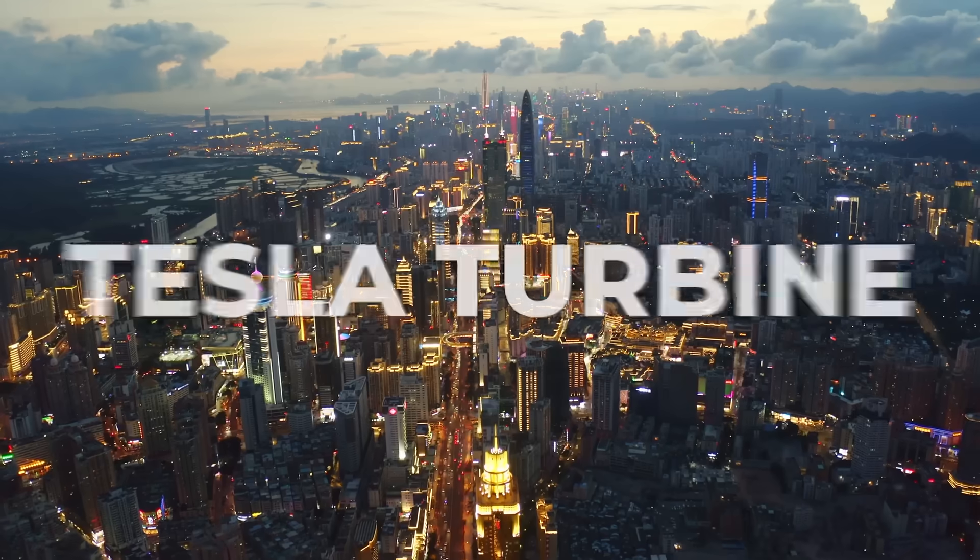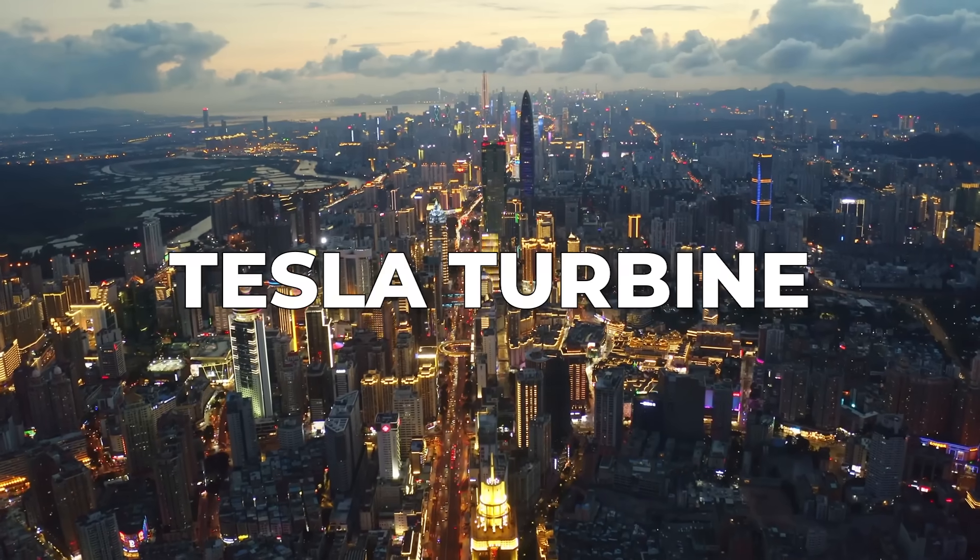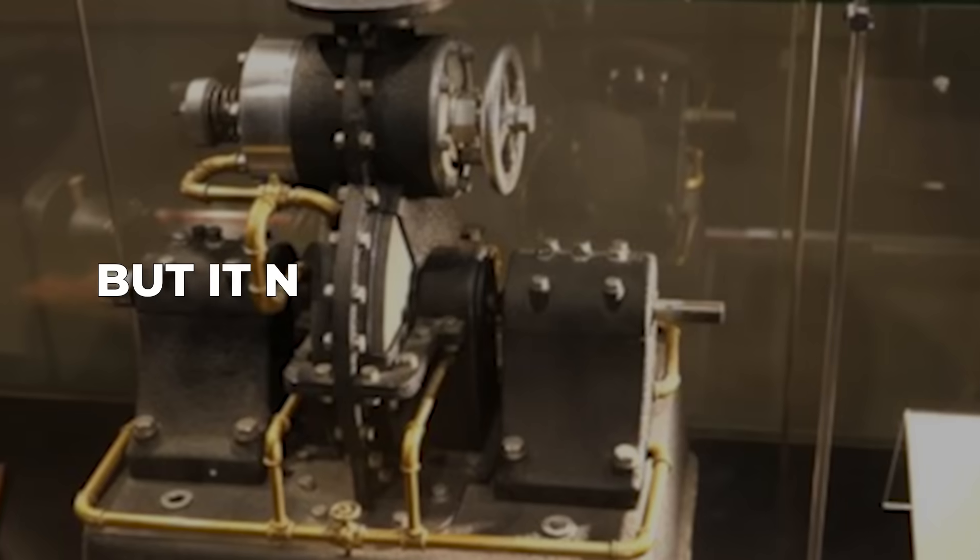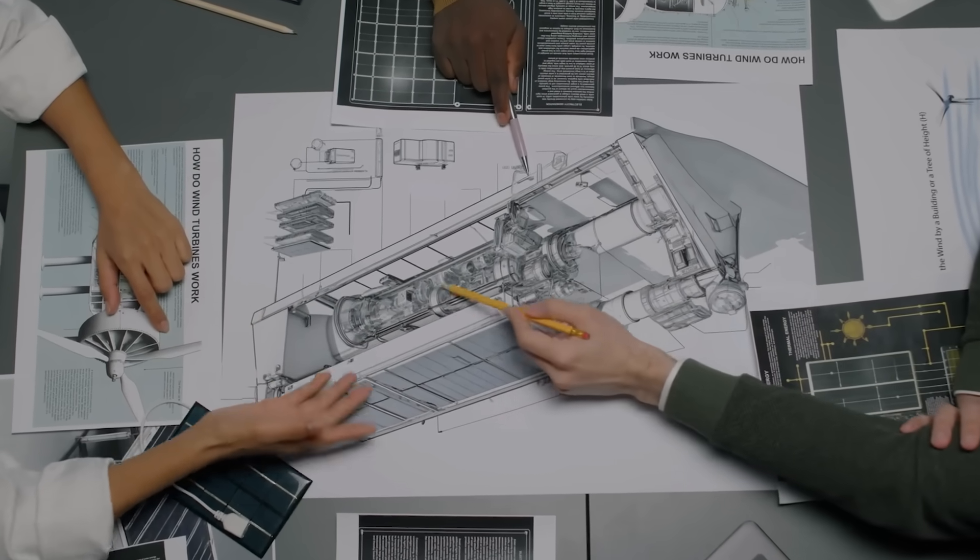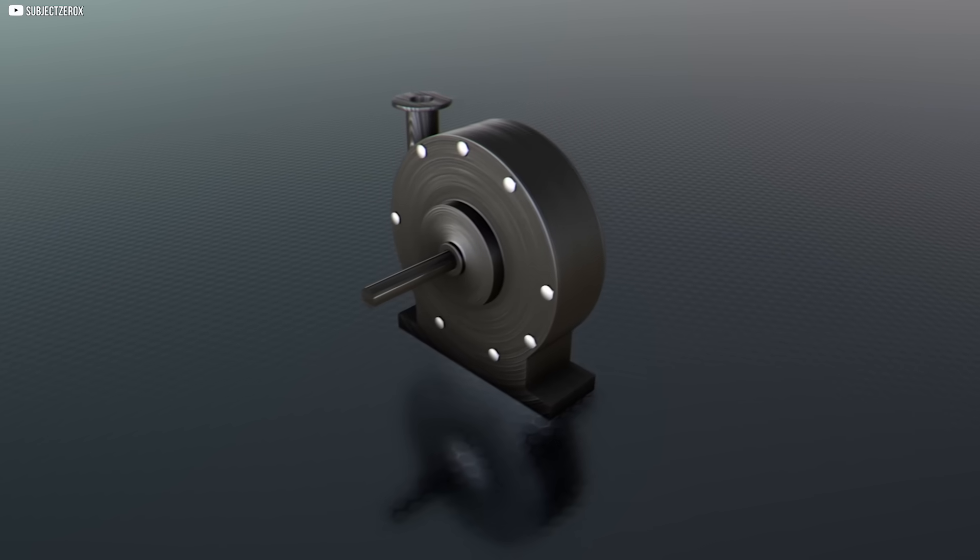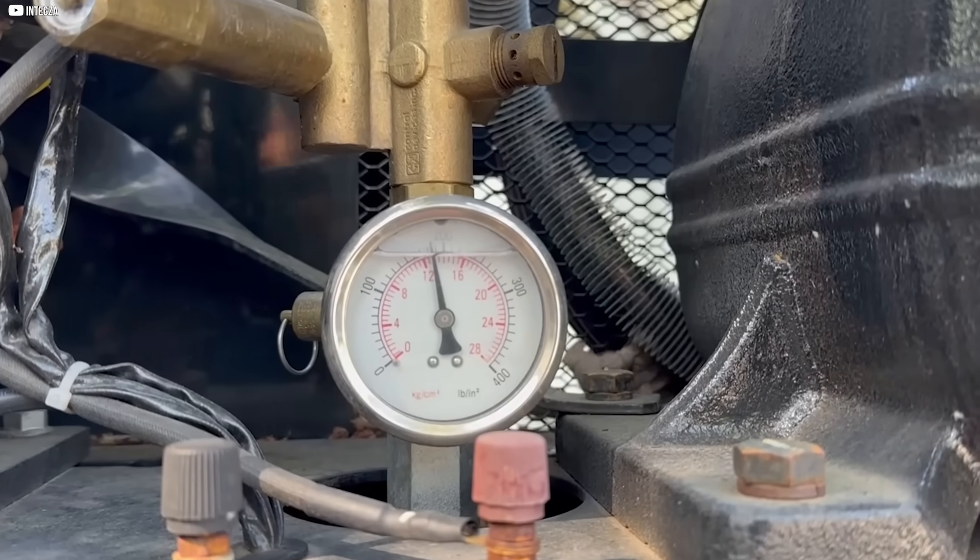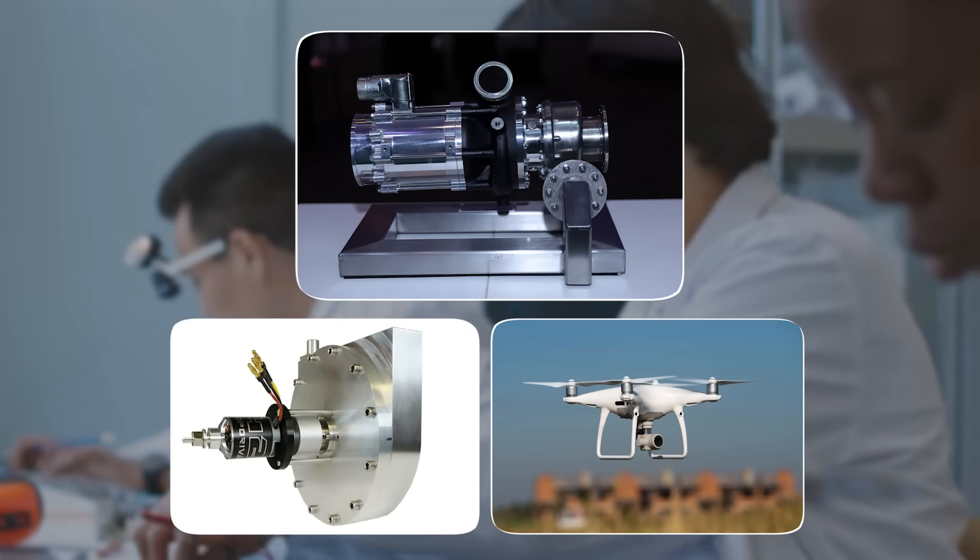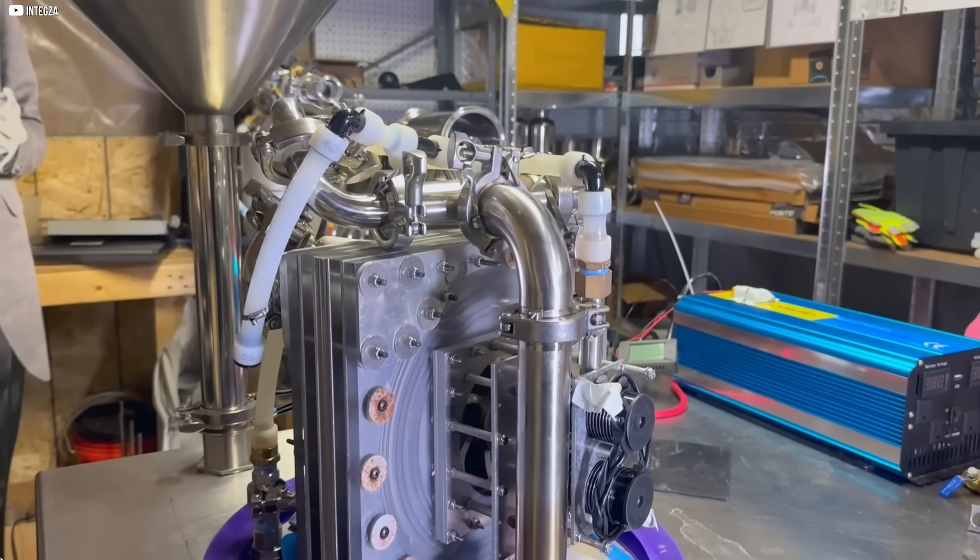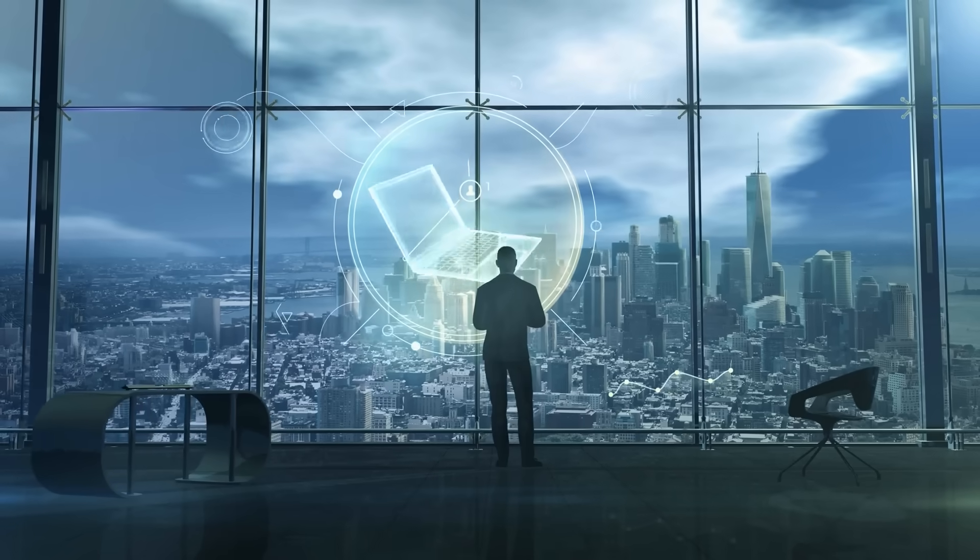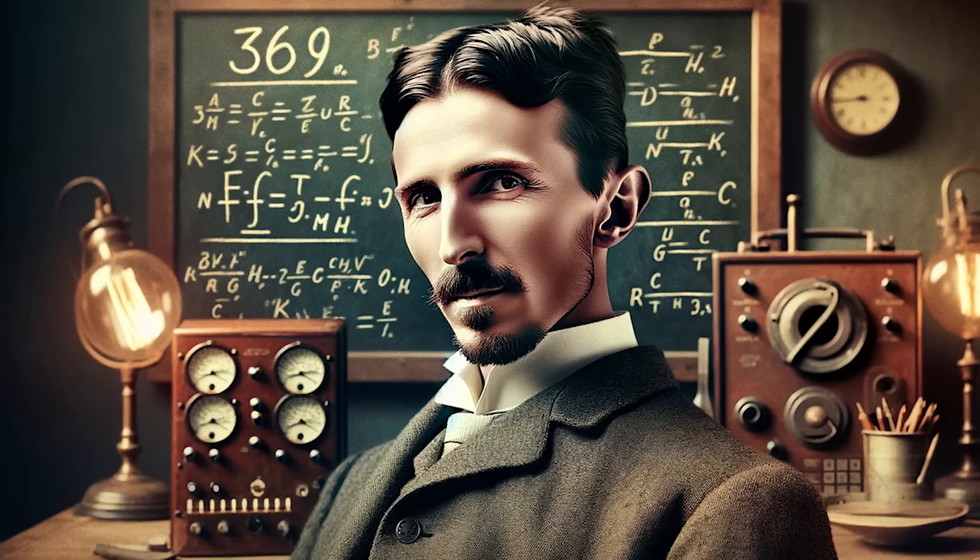Legacy in motion. The Tesla turbine never powered a city. It didn't dethrone the steam giants, but it never vanished either. Today, engineers return to it with better tools. 3D printing creates perfect gaps. Modern alloys handle speeds Tesla only dreamed of. Labs test bladeless turbines in drones, micro-generators, and geothermal pumps. Its simplicity makes it scalable. Its silence ideal. In a world craving clean and compact tech, Tesla's idea feels timely again. It was overlooked. Maybe mistimed. But never wrong.